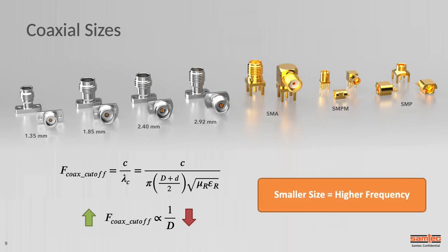A couple of points I want to highlight: coaxial sizes. In the RF world, we're often dealing with a single-ended coaxial transmission line. There's a cutoff frequency — the maximum frequency before you transition from a TEM wave and start exciting a TE11 wave, which is not where you want to be transmitting. That cutoff frequency is inversely proportional to the diameter of the coax. The basic takeaway is that smaller-diameter coax is a higher-frequency or higher-bandwidth product.